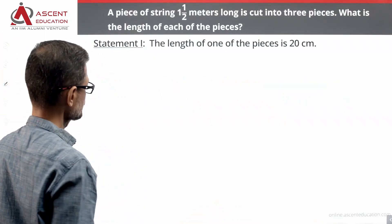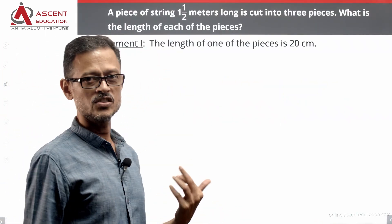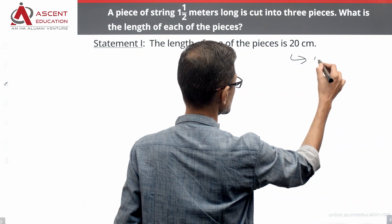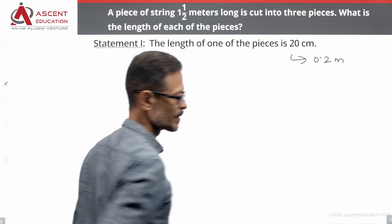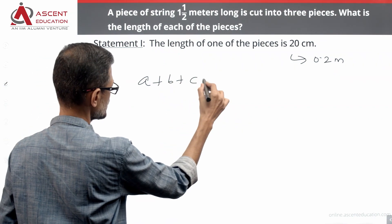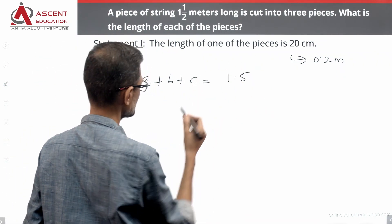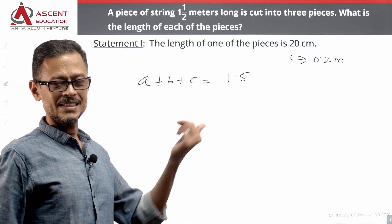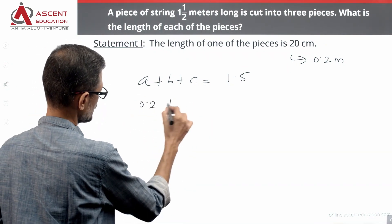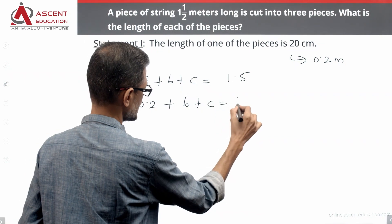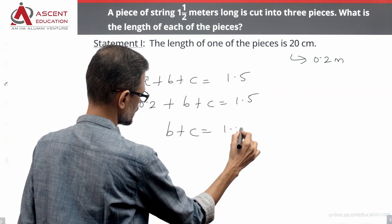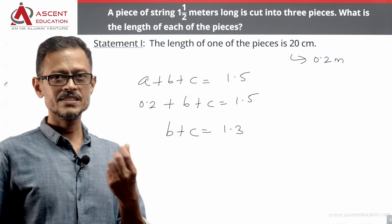Looking at statement one alone: the length of one of the pieces is 20 centimeters, which is equal to 0.2 meters. So A plus B plus C equals 1.5. If A is 0.2, then B plus C equals 1.3.